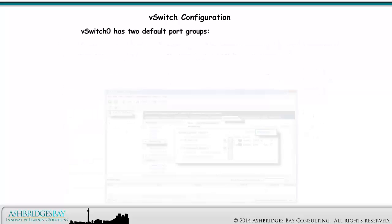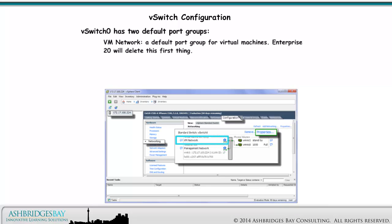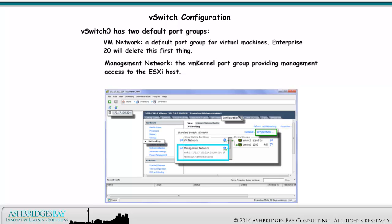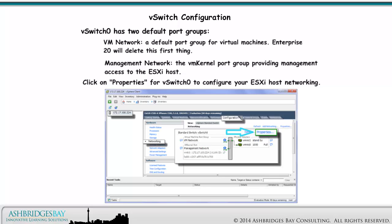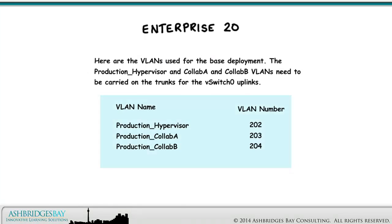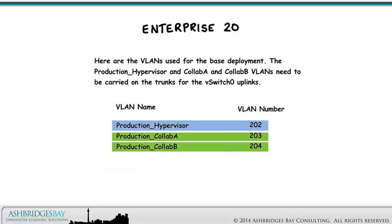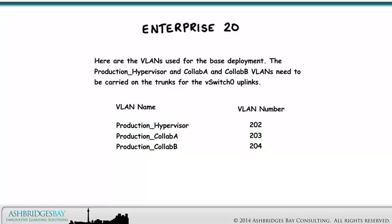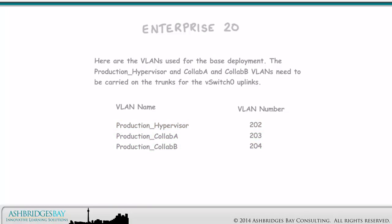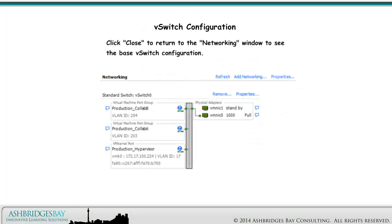vSwitch 0 has two default port groups: VM Network, a default port group for virtual machines (Enterprise 20 will delete this first thing), and the Management Network, the VM kernel port group providing management access to the ESXi host. Click on Properties for vSwitch 0 to configure your ESXi host networking. The Production Hypervisor and Collab A and Collab B VLANs need to be carried on the trunks for the vSwitch 0 uplinks — see our rack and cable drawing. Click Close to return to the networking window to see the base vSwitch configuration. ESXi host networking is configured.